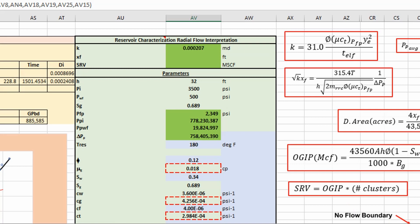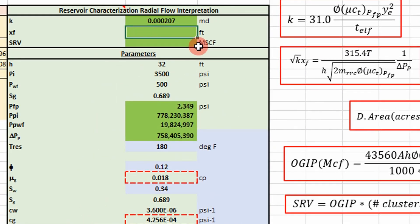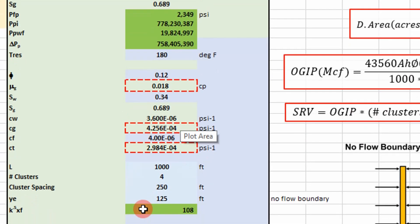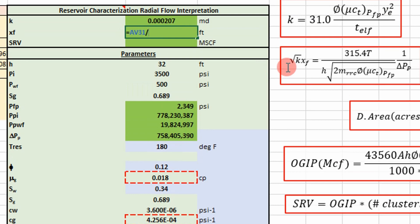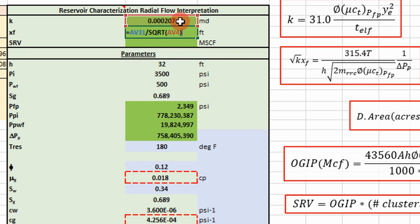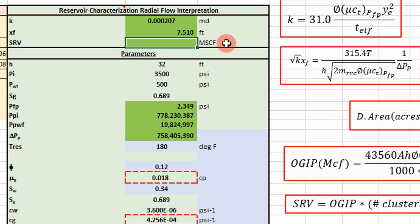The next thing we want to do is calculate our fracture half length — this is important for spacing. It's just going to be our square root of k·x_f divided by the square root of our permeability. And that is our fracture half length: 7,510 feet. That seems pretty large, and we're doing this interpretation on a gas well that we don't know if it was hydraulically fractured or not. This is actually a radial flow well, so this interpretation won't follow through, but I'm just showing you the mechanics so that when you do encounter a well that fits this interpretation, you know how to do it.